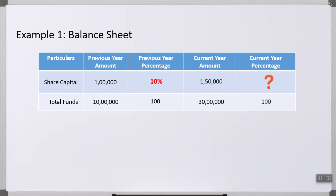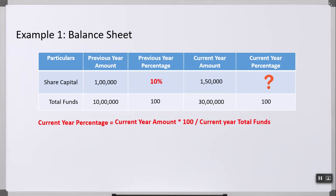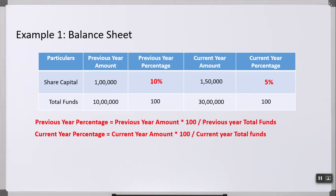In the current year, share capital is 1 lakh 50,000, but total funds have also increased to 30 lakhs. Total funds will again be considered as 100%, and we calculate the percentage using cross multiplication. The formula is: current year amount × 100 ÷ current year total funds, which is 1,50,000 × 100 ÷ 30 lakhs = 5%. So the absolute amount of share capital increased from 1 lakh to 1.5 lakh, but relative to total funds, it dropped from 10% to 5%. The entire interpretation changes — that's why we use common size analysis.